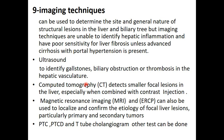CT scan is very important — you can send the patient for CT scan for detection of smaller focal lesions in the liver. MRI of the liver is very helpful, and MRCP and ERCP (endoscopic retrograde cholangiopancreatography) are very important to localize and confirm the etiology of focal liver lesions, particularly primary or secondary tumors. You can also do PTC (percutaneous transhepatic cholangiography) and T-tube cholangiogram, an important test used commonly in post-operative patients after biliary surgery to assess the patency of the biliary passages.